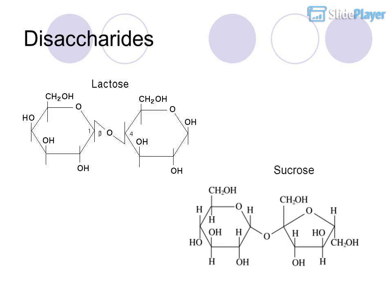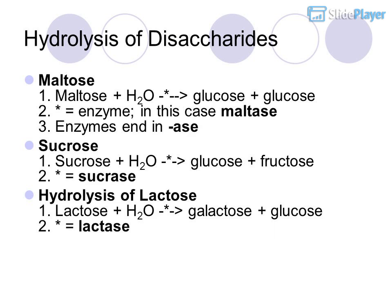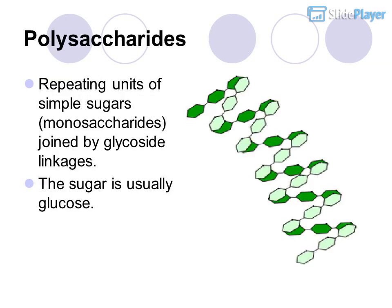Hydrolysis of disaccharides: Maltose + H2O → glucose + glucose (enzyme: maltase). Sucrose + H2O → glucose + fructose (enzyme: sucrase). Lactose + H2O → galactose + glucose (enzyme: lactase). Note that enzymes end in '-ase.'